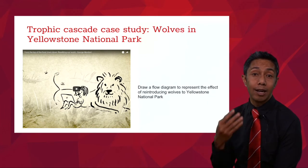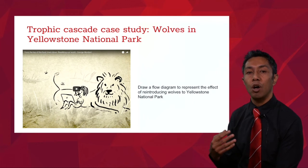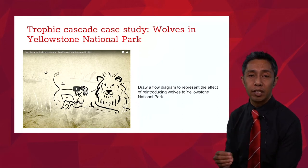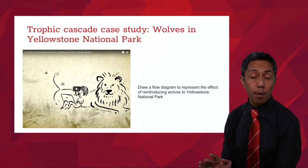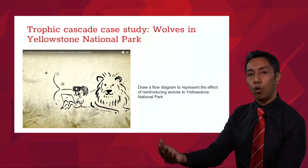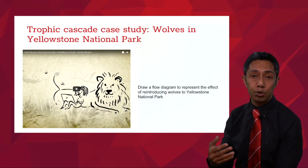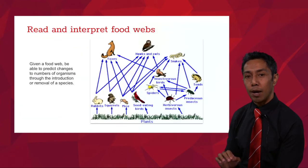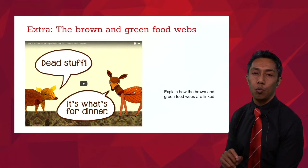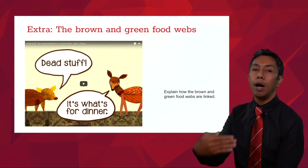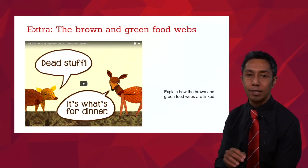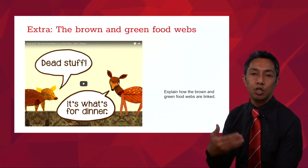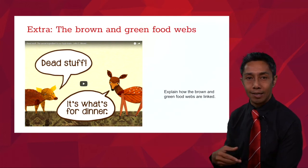A fascinating case study is the reintroduction of wolves to Yellowstone National Park. Drawing a flow diagram to represent changes in organism numbers as a result of that reintroduction is a great way to understand trophic cascade. There also exists a brown food web behind the green food web we typically examine — this is an extra concept not examined but highly recommended to explore as it enriches understanding of science.